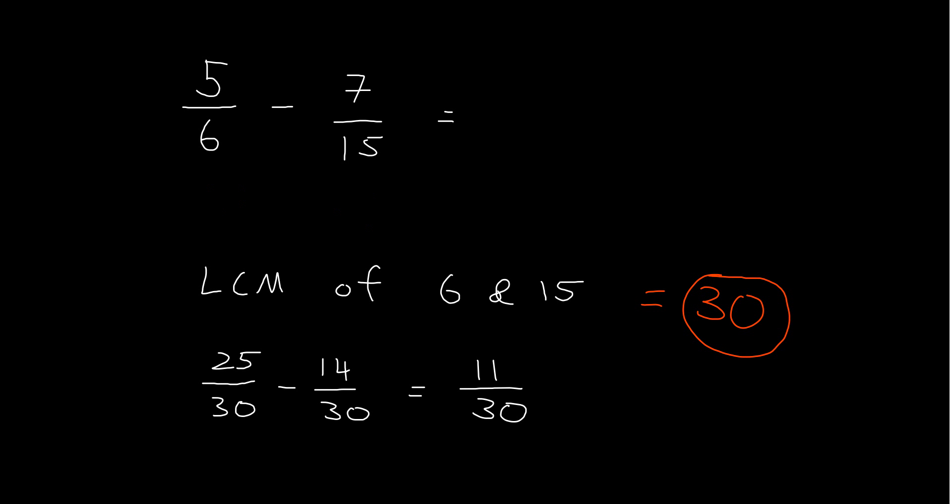And you got 25 out of 30 and 14 out of 30. And then we can just subtract them and we get 11 out of 30. If you're wondering why that is or having trouble seeing it, if I multiply the 6 by 5, I get to 30. So I've multiplied 6 by 5 to get to 30. So I've also got to multiply the 5 by 5 and that gives me 25. And the same thing here. I multiplied the 15 by something to get to 30 and I want to multiply the 7 by the same thing. So tell me, what do you think I multiplied the 15 by to get to 30?